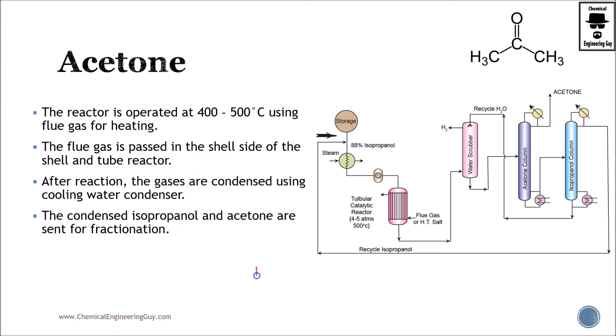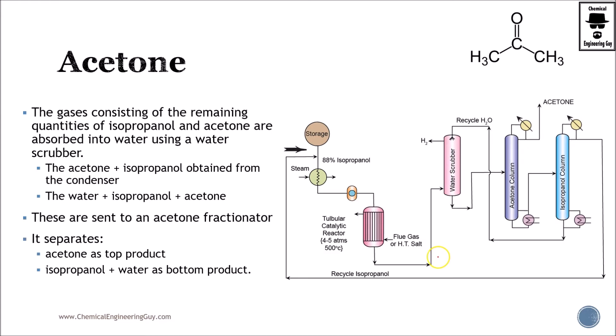Isopropanol is not going to react completely. You're going to have some acetone and some hydrogen gas. Hydrogen gas is very easy to get rid. We're going to be using this water scrubber. We're going to add water in order to ensure the solubility of both acetone and isopropanol. Hydrogen gas is very low soluble in water, so this will go as off gas. Then we have water, isopropanol IP, and acetone AC.